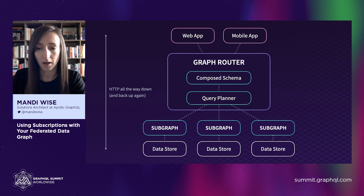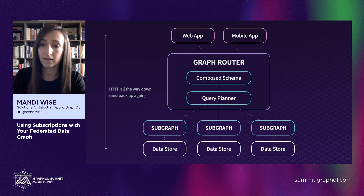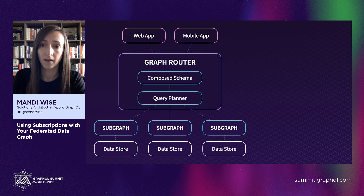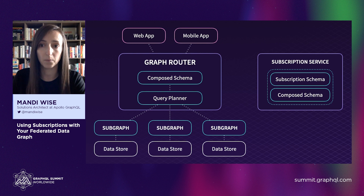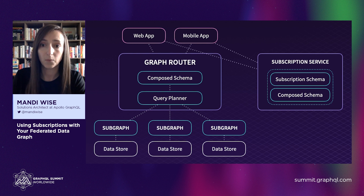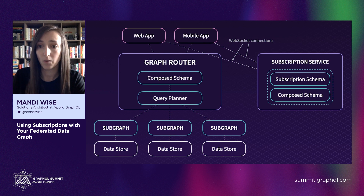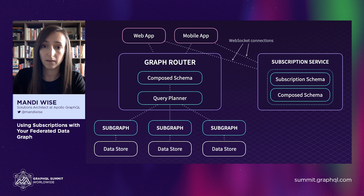In the spirit of decoupling, ideally our federated datagraph would remain as the stateless execution engine of the API. Alongside it, we could have a separate and dedicated subscription service that's responsible for maintaining the stateful connections with clients, as well as processing and responding to those requests. In this scenario, the stateless and stateful transport-related concerns of the graph can be scaled independently.